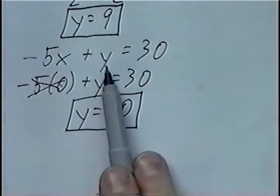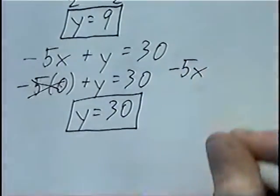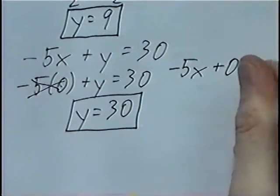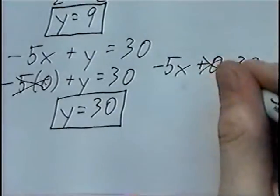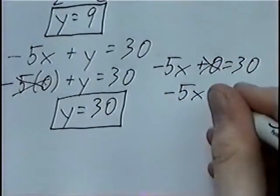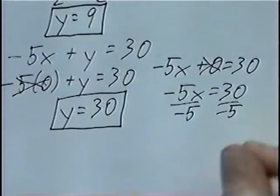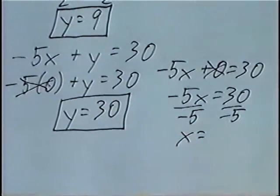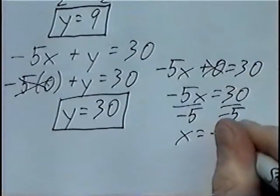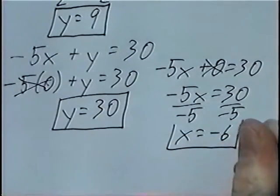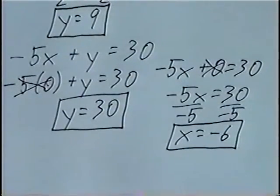For the second part of the problem, go back to the original equation and this time we'll put a 0 for the Y value. So we'll have negative 5X plus 0 equals 30. Zero we can ignore, so we'll have negative 5X equals 30. Solving, we can divide by negative 5. So X equals 30 divided by negative 5, which would be negative 6. Our two intercepts: the X intercept is negative 6, and the Y intercept is 30.